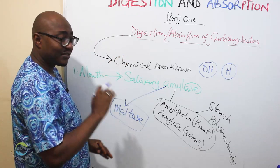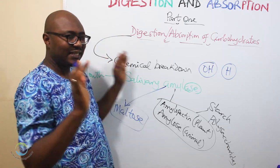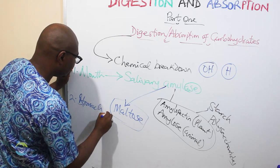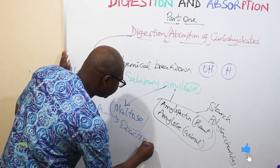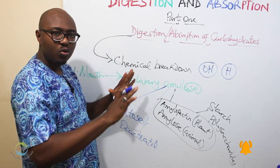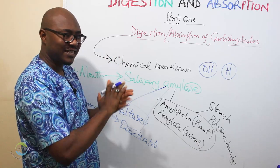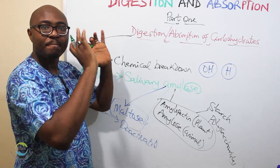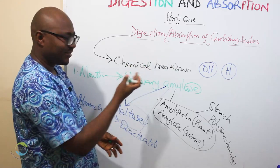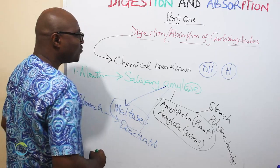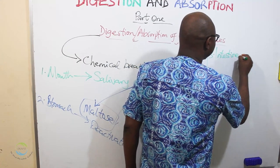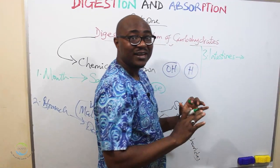Once the food reaches the stomach, salivary amylase is totally deactivated. So essentially no carbohydrate digestion happens in the stomach. The reason is clear: the acidity of the stomach is very high and totally does not favor this enzyme. The food then moves to the intestines.